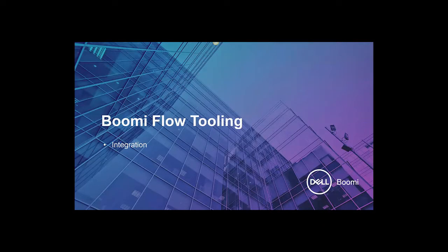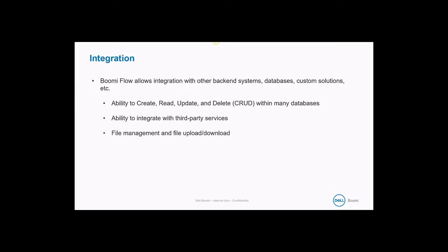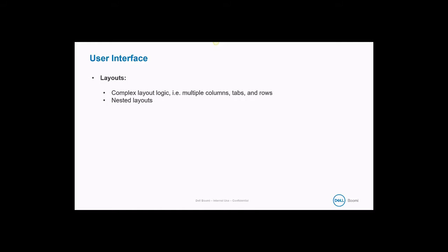Now we will begin talking about the Boomi Flow tooling. Boomi Flow allows integration with other back-end systems, databases, custom solutions, etc. It gives us the ability to create, read, update, and delete within many databases, and the ability to integrate with third-party services. Boomi Flow also gives us the ability for file management — uploading or downloading files. Regarding the user interface, Boomi Flow provides complex layout logic such as multiple columns, tabs, and rows, as well as nested layouts that can be reused. Components available include file handling, tables, data entry, search, inputs, combo boxes, text areas, and rich text. In this workshop we'll get the opportunity to work with some of these components as well.